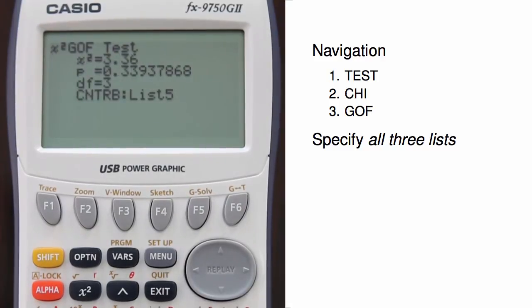Hitting execute runs the test, and we get a test statistic of 3.36 and a p-value of 0.34. You can also double-check your degrees of freedom here and see which list to look in for the contribution of each bin to the test statistic.